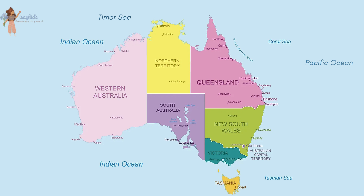Australia is an island. It is surrounded by various oceans such as the Indian Ocean, Pacific Ocean, and seas such as the Timor Sea, Coral Sea and Tasman Sea.